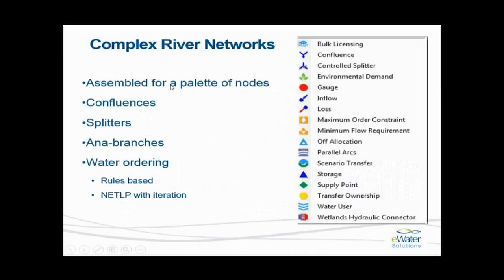First we start by creating a river network. We have what is called a node palette which we use in Source to drag and drop our nodes onto the schematic and connect them together with links. The networks can be connected with confluences combining two streams of flow to one, and splitters which divide one into two. They can split out and come back again in anabranches, and we also have two types of water ordering representation.